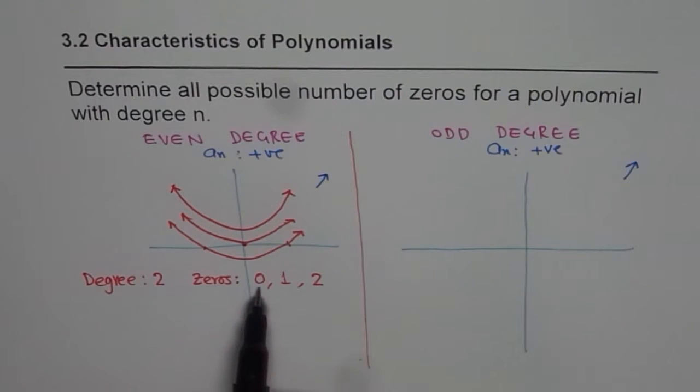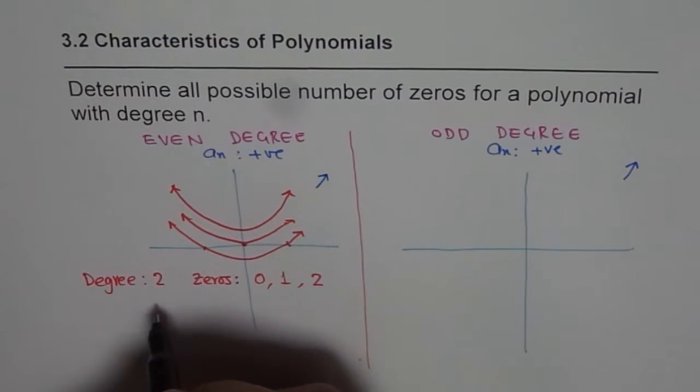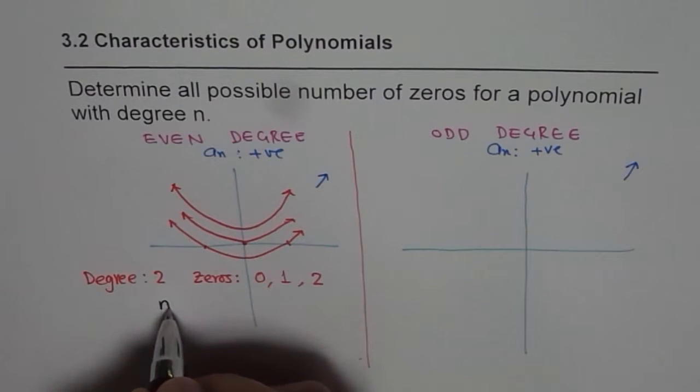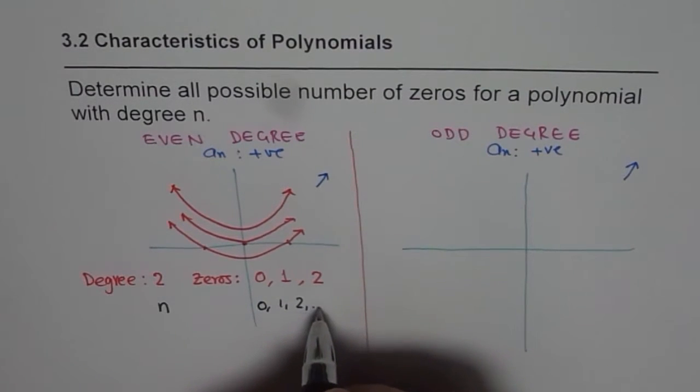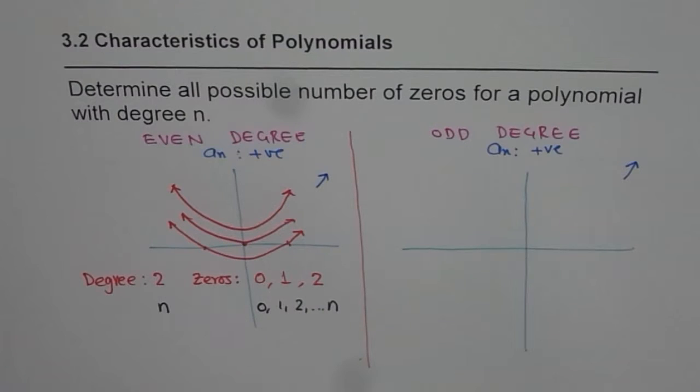So the number of zeros for a parabola which has a degree of two is zero, one, or two. So you can say that for an even degree function, if the degree is n, then the number of zeros will be from zero, one, two, to n. You need to verify whether this is true or not. The maximum number of zeros you can have is the same as the degree. But in case the function is even, then the minimum number is zero.